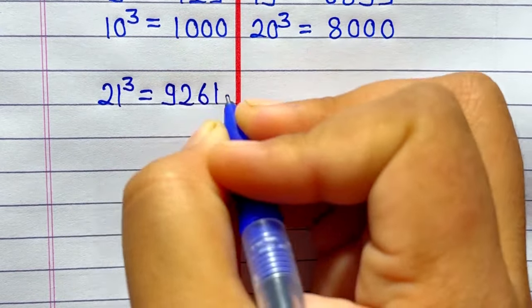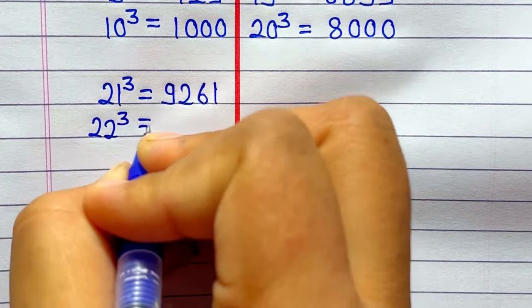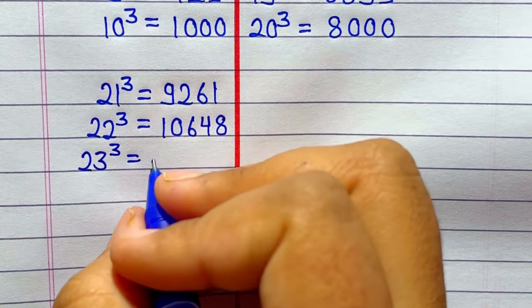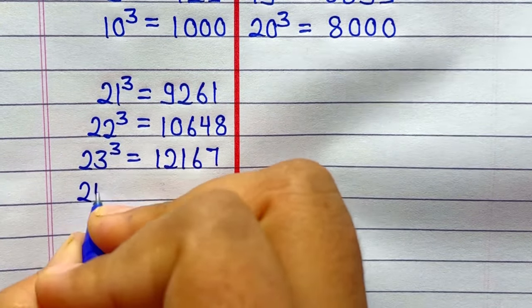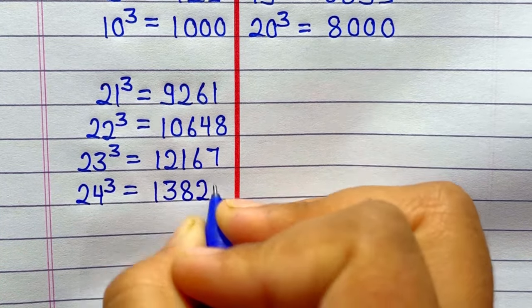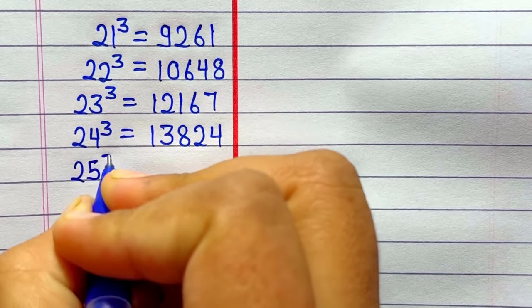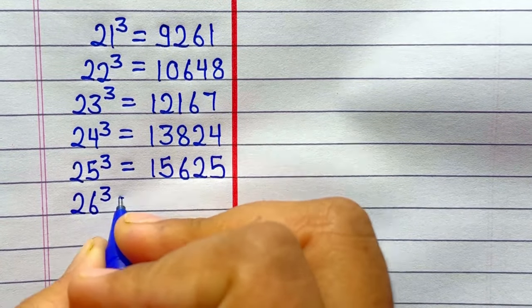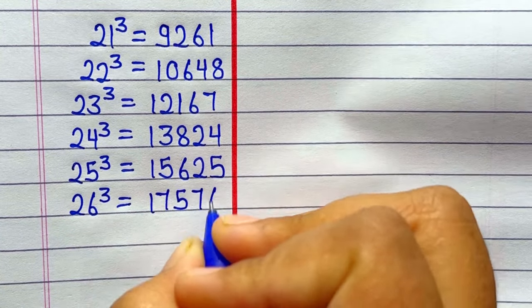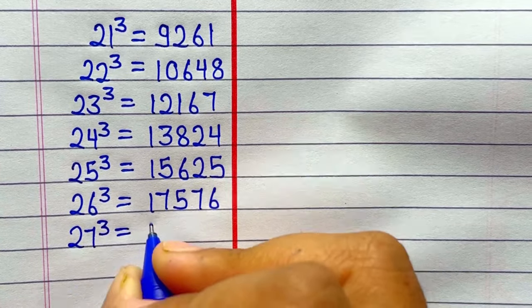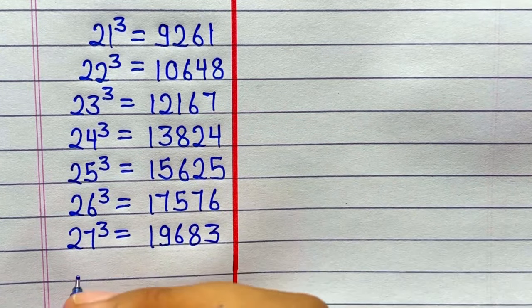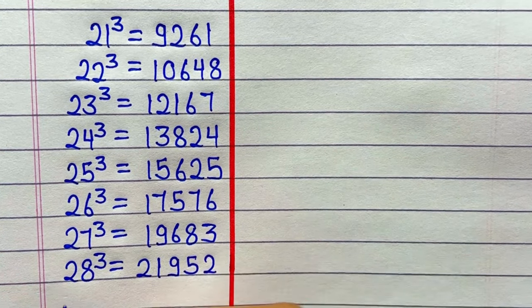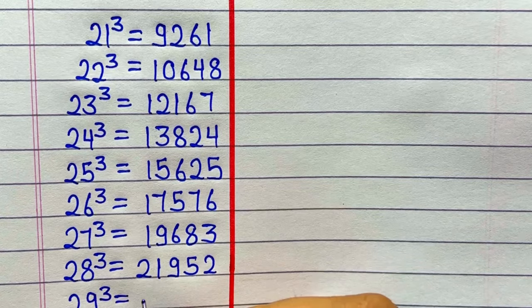21 ka cube hoga 9261. 22 ka cube hai 10648. 23 ka cube hai 12167. 24 ka cube hoga 13824. 25 ka cube hoga 15625. 26 ka cube hoga 17576. 27 ka cube hoga 19683. 28 ka cube hoga 21952. 29 ka cube hoga 24389.